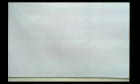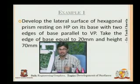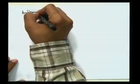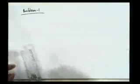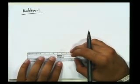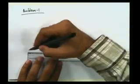We don't require line XY in development problems. Let's get to paper — Problem Number One. First, we draw the front view and top view of the hexagonal prism. I'll draw the top view at the bottom of the paper. The side is 20 mm, equivalent to 2 cm, so I'll draw with that dimension.